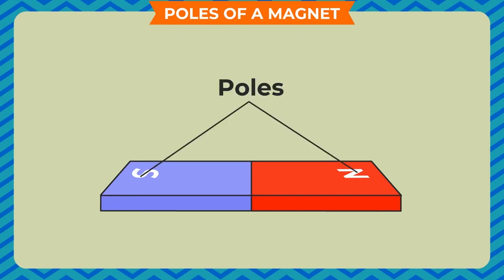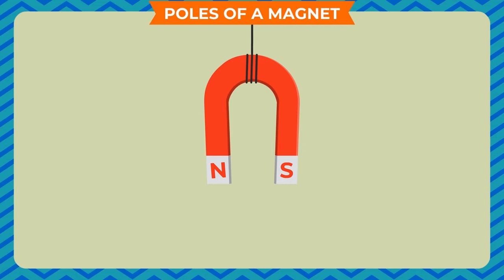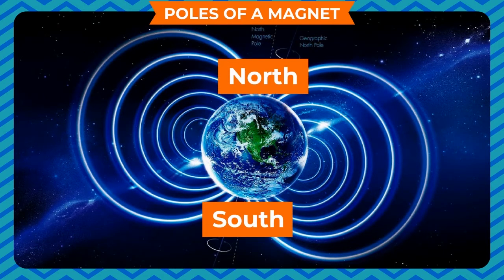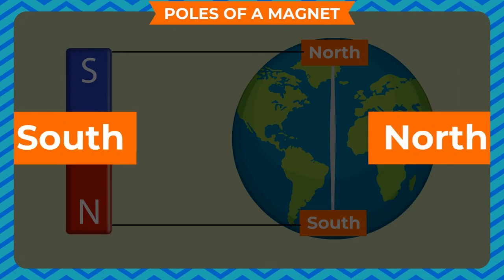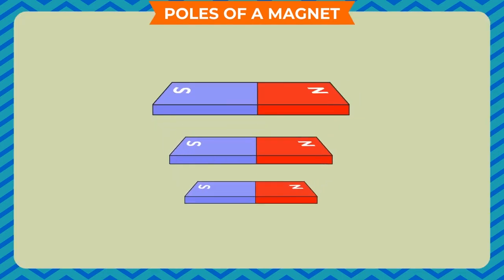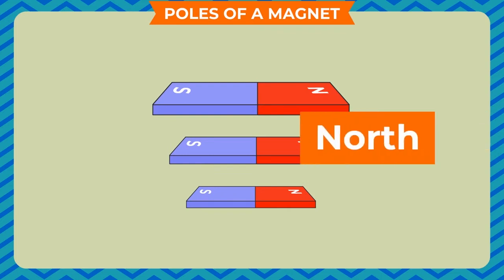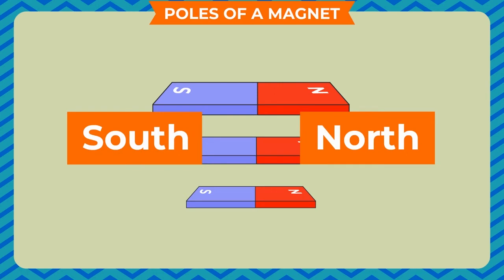Every permanent magnet has two endpoints where the lines of magnetic field concentrate. If we hang a bar magnet freely in the air with the help of a thread, it aligns in the north-south direction, towards the north and south geographical poles of the earth. These endpoints are called the poles of a magnet. The end which rests towards the north pole of the earth is called the north pole of the magnet. Every magnet has two poles — north and south. When a magnet breaks into two or more pieces, each broken piece has two poles. There is no magnet on earth with a single pole; poles always exist in pairs.